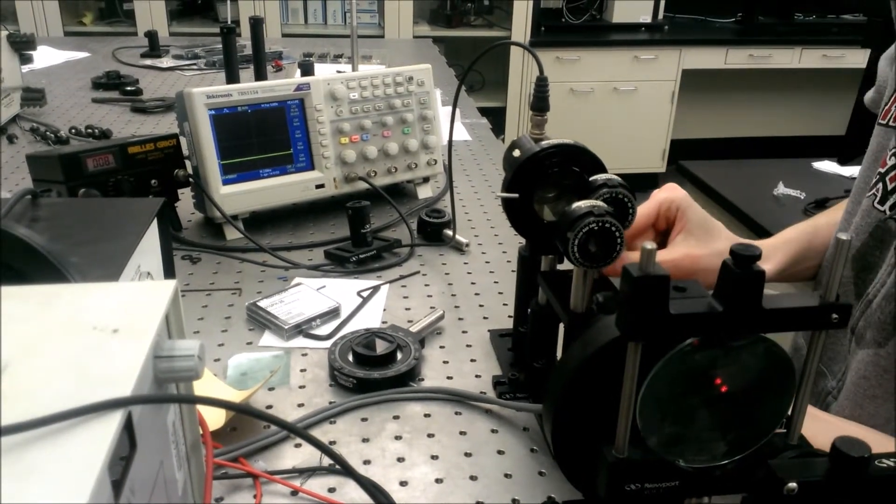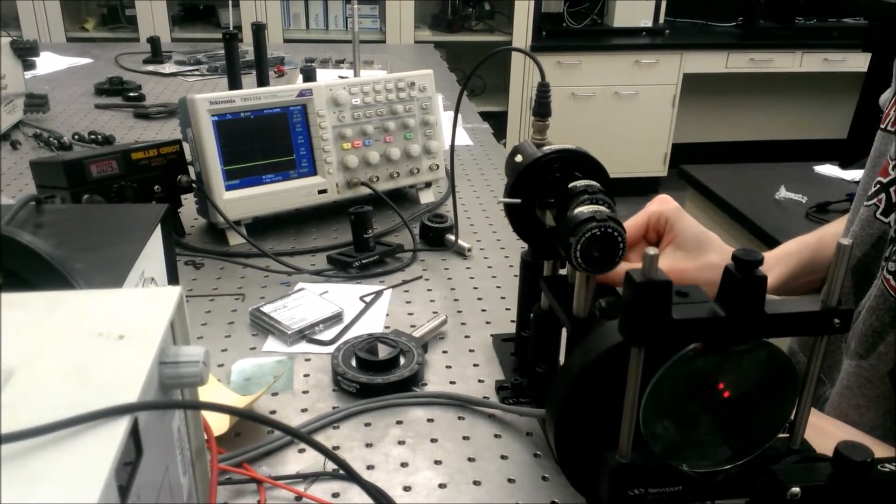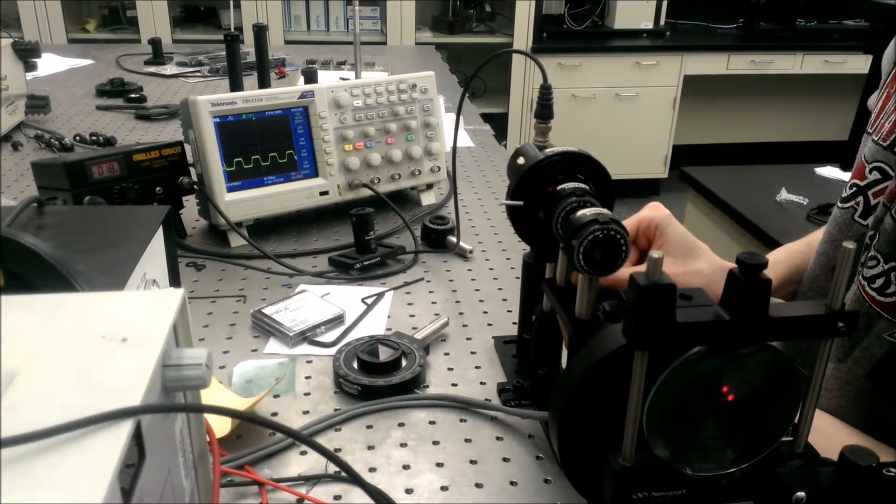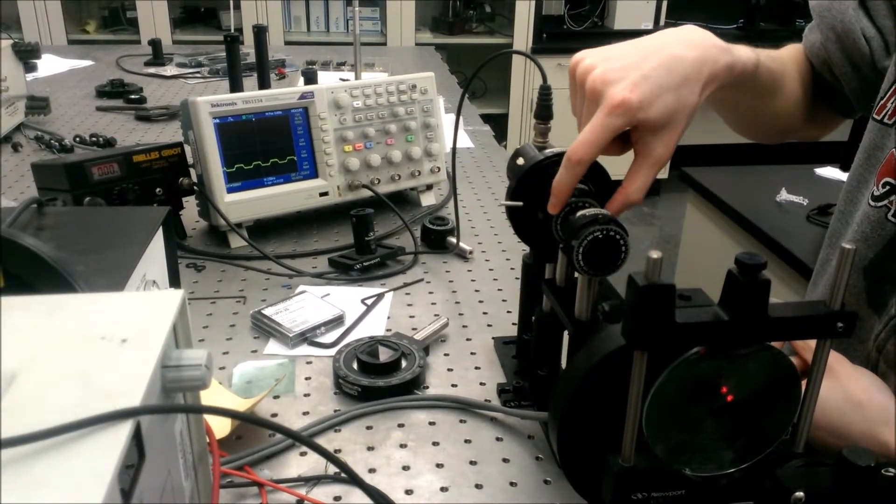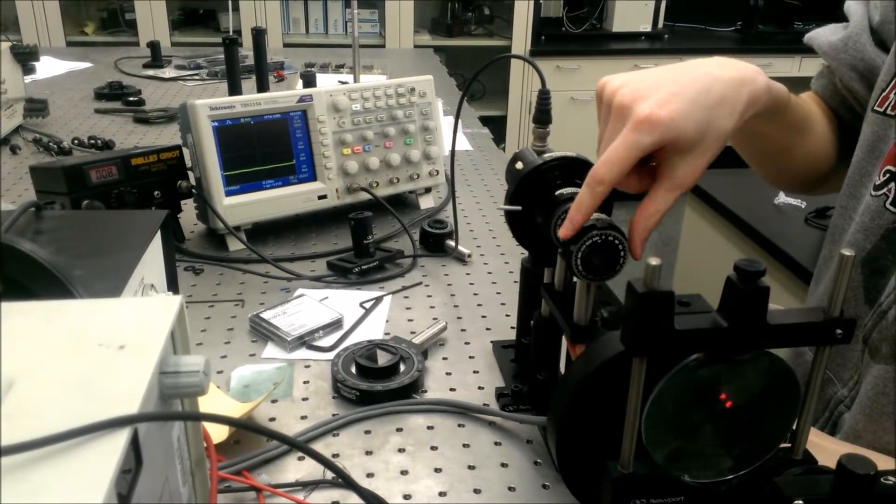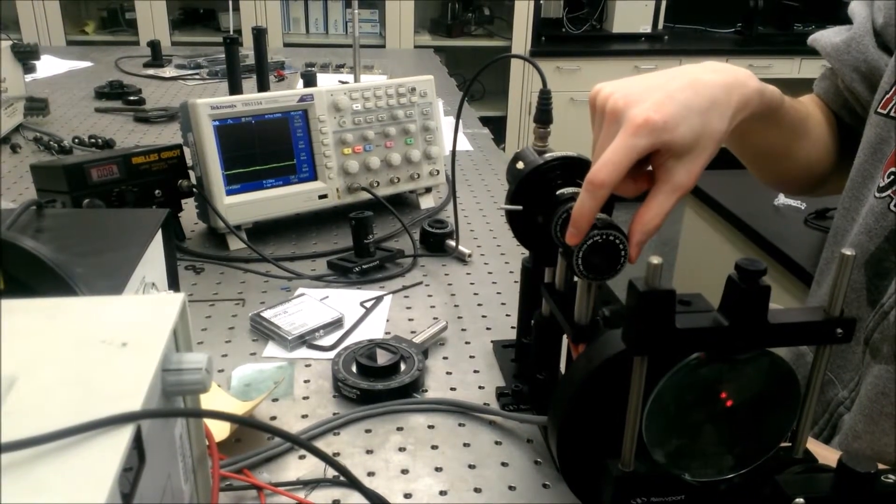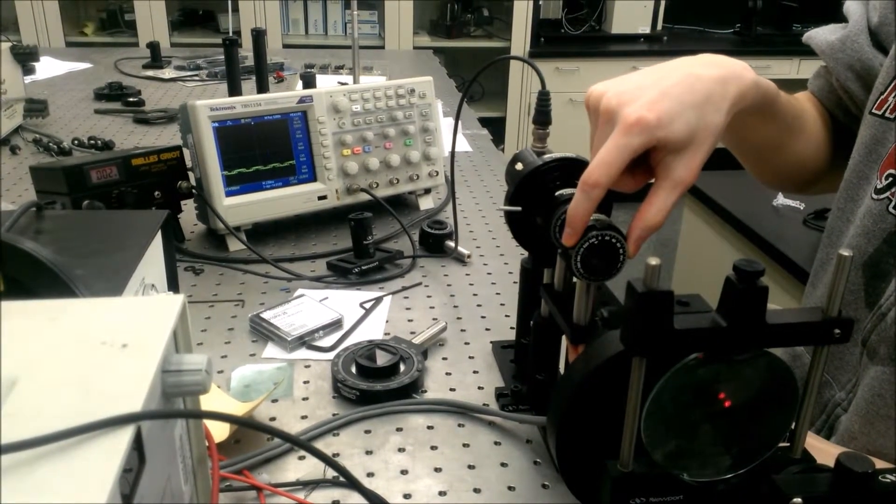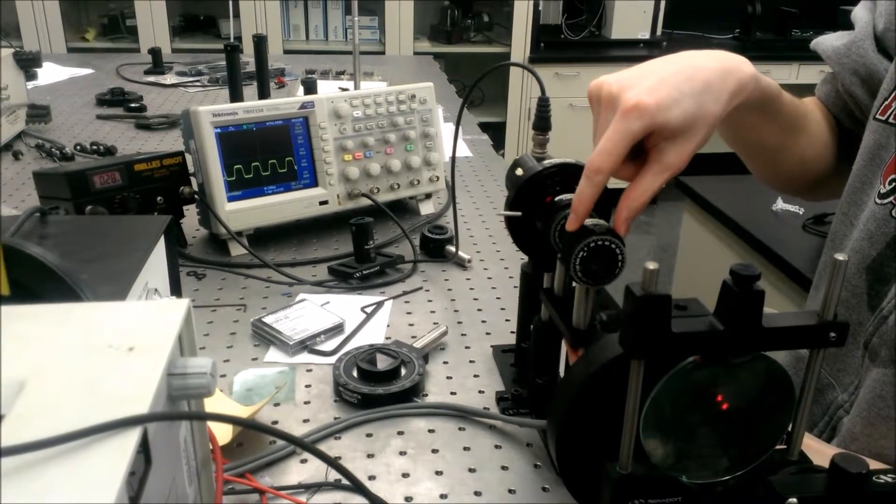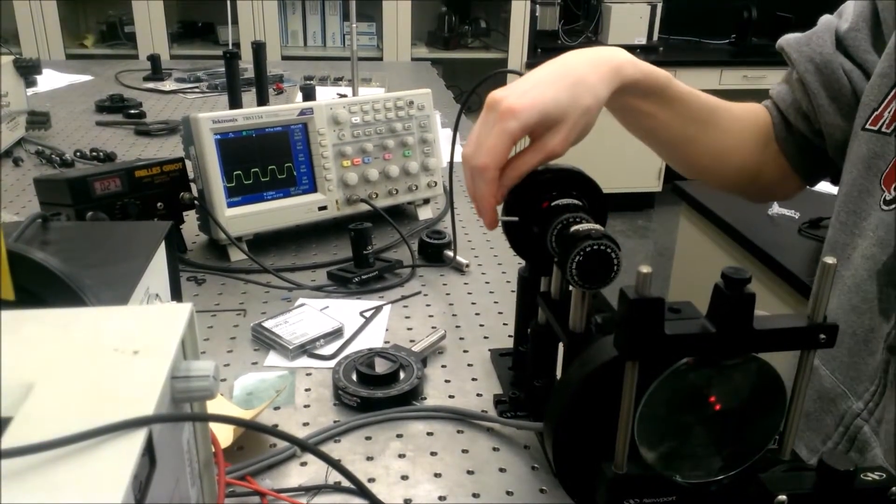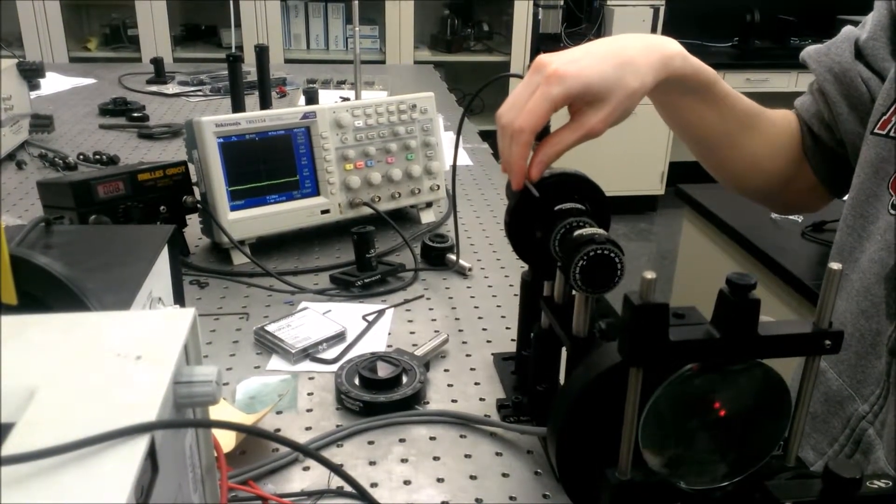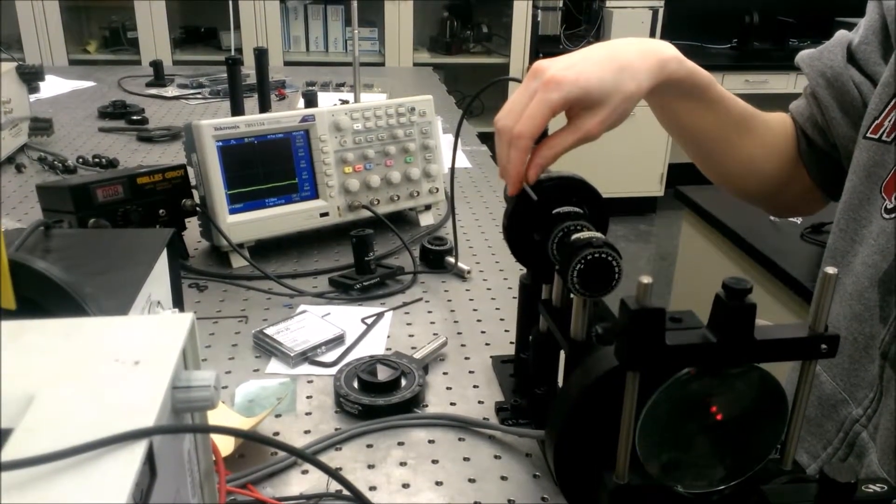Now, you're going to be inserting an unknown wavelength plate into the beam line and then setting it, initially, at 30 degrees. Now what you're going to do is measure in 15 degree increments between the quarter wavelength, and then trying to extinguish the light with the analyzer, and then recording the deviation in angles.